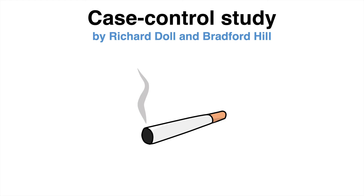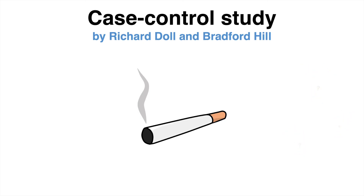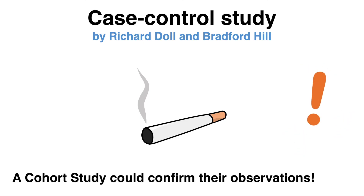That example was inspired from one of the most well-known case control studies, which was indeed performed by Richard Doll and Bradford Hill. They published the strong association between tobacco consumption and lung cancer in 1950 and 1952. During that time, there were still people questioning their results. Only a decade later, a prospective cohort study could indeed validate their previous observations.